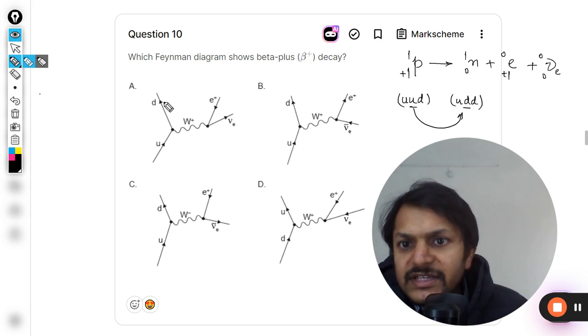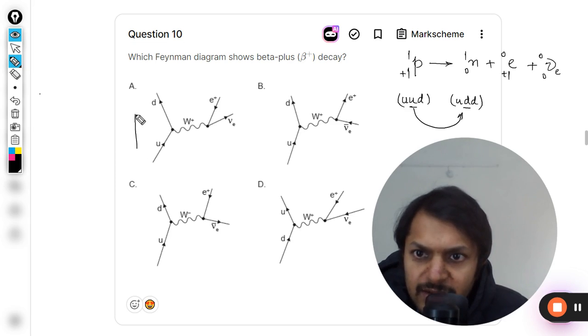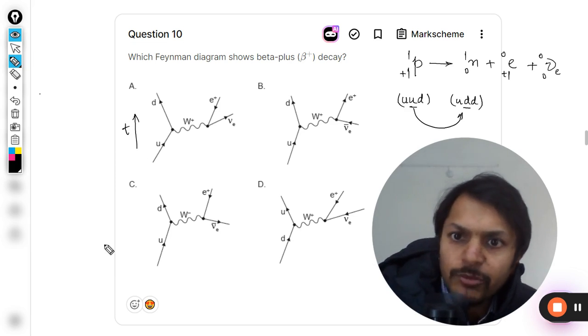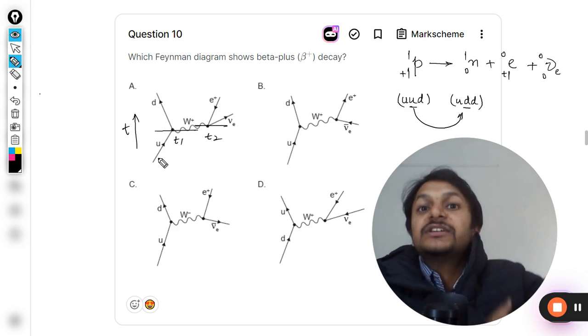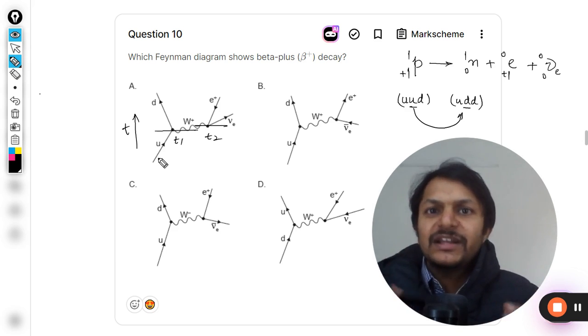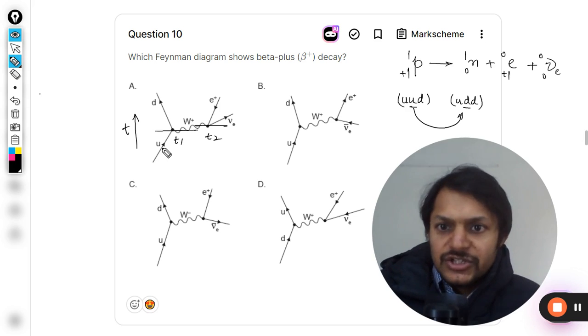These two are not reacting, this is the resultant, so the time is going in the upward direction. This is timestamp one, this is t1, and this can be taken as t2, some other time. So these two events are basically separated in time.